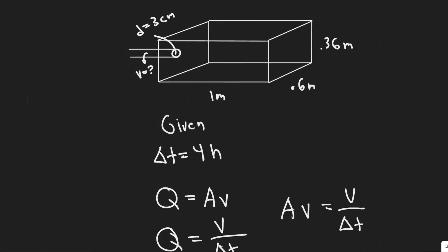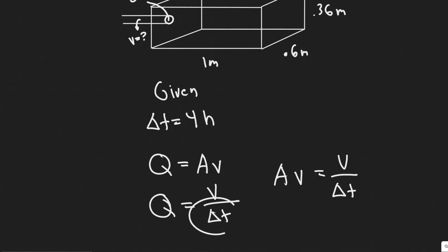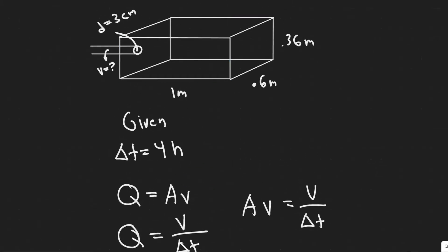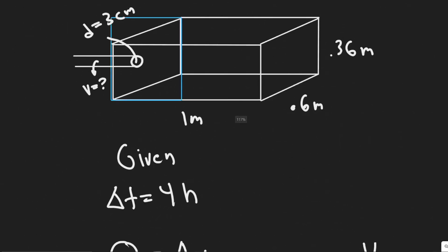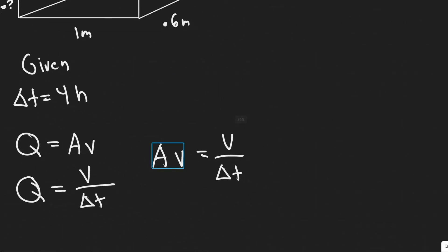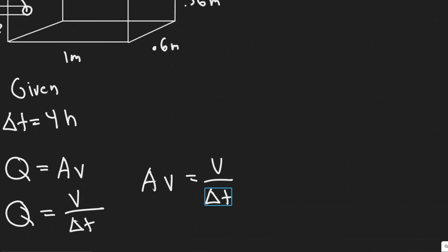We find the velocity by looking at the flow rate of the tank, which we denote as volume per time — how much volume in a certain amount of time. If we look at the tank, how fast is it going to flow out? We want the flow rates to be equal to each other, because if the filter is going to clear it out, their flow rates have to be the same. That means our A×V has to equal volume divided by delta T, where V is the volume of the tank.